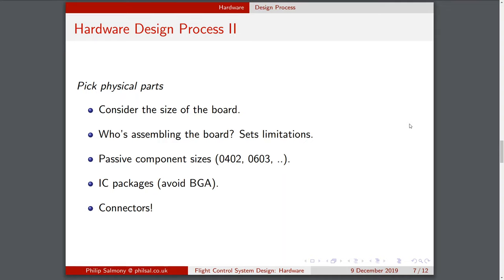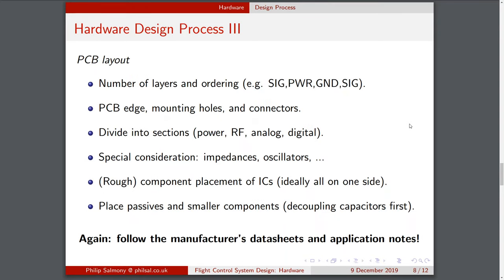Common connectors are GPIO headers with 2.54mm pitch, though they have no latching mechanism and could fall out during flight. Once you've picked the parts and done the schematic, it's time to lay out the PCB. First, decide how many layers — it's generally a good idea to go with a 4-layer PCB because it makes power connections and routing easier, and the extra cost isn't usually significant. Then choose layer ordering: typically signal layers at the top and bottom, with power and ground in the middle.